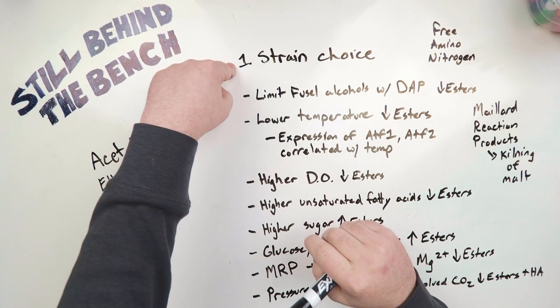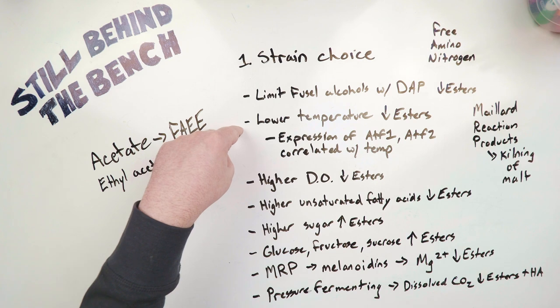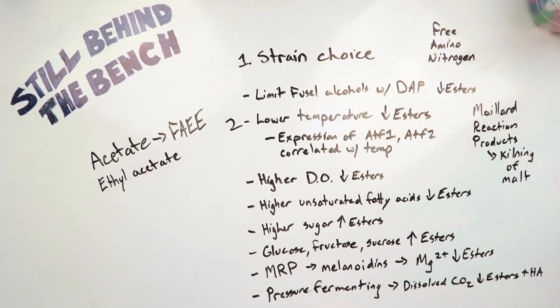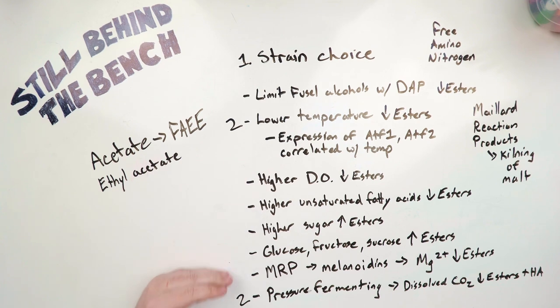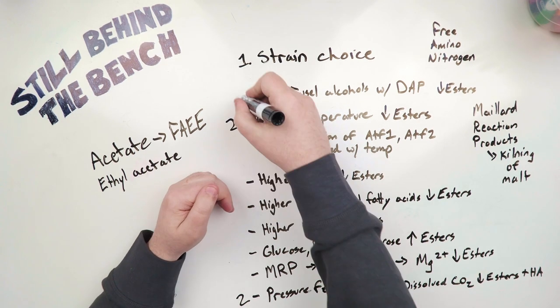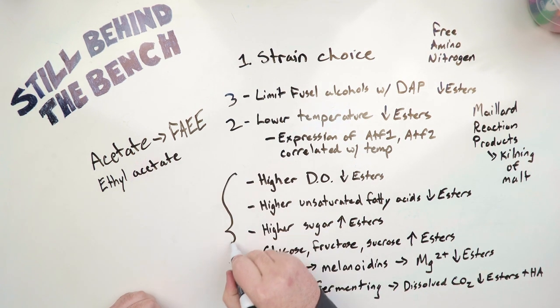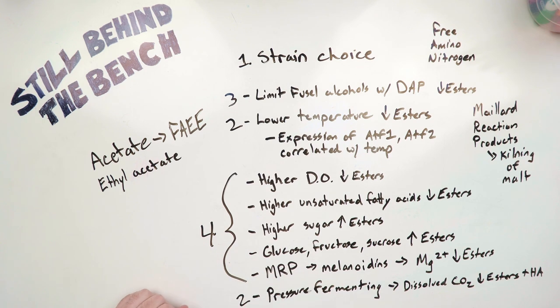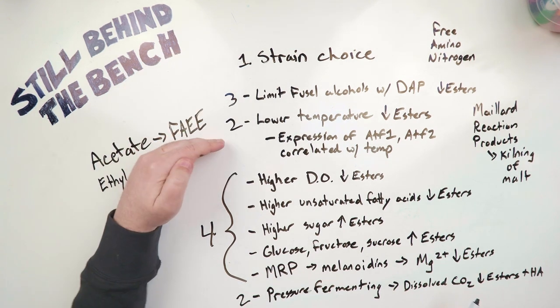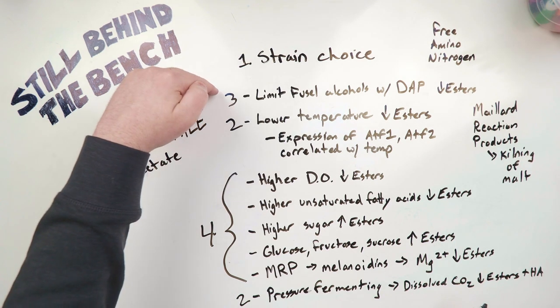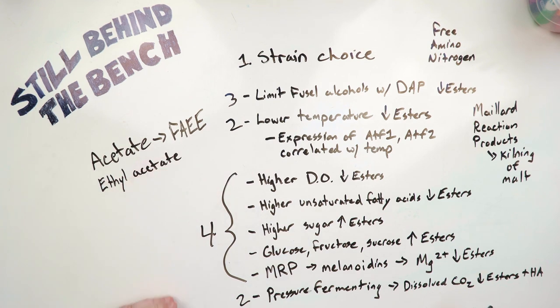I think the most important one is strain choice, which is why I put a 1 up beside it. Temperature is probably going to have the next biggest impact. And I think pressure fermenting is going to have the same impact as lowering the temperature. And then I can't really speak to the rest of these, but they're all going to come in. This would probably be 3, and then these are probably 4. Getting better at drawing curly braces. Okay, so choose the right strain. Ferment at a lower temperature if you can. And if you can pressure ferment, for sure give that a try. Try and limit the amount of fusel alcohols you're producing. And then you can try all these other things as well. And you will limit the amount of esters you're producing.